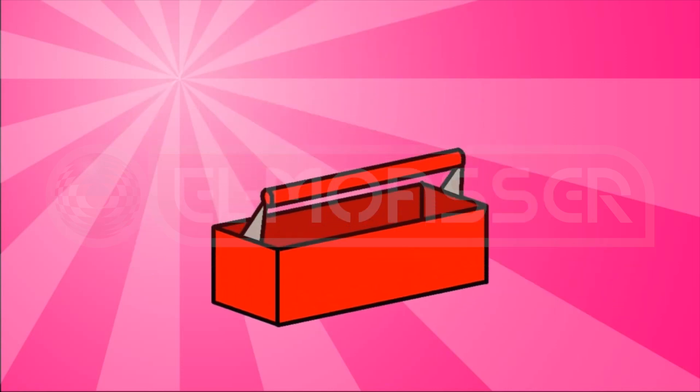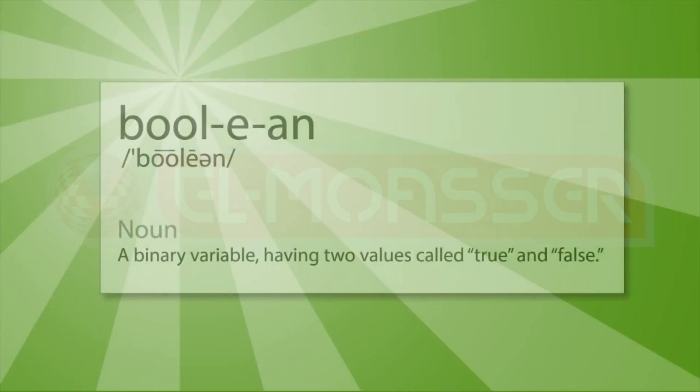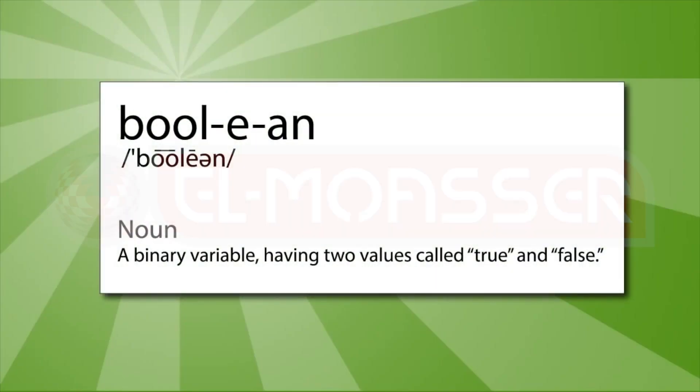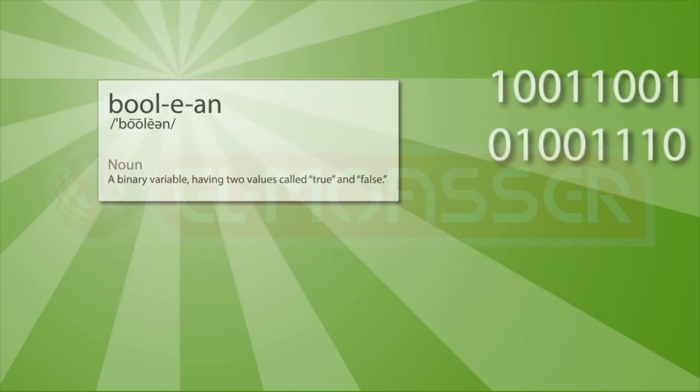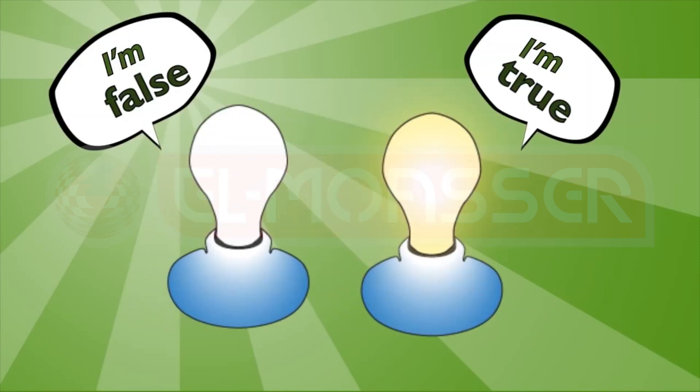Logic gates only work with boolean values. This makes sense when computers work with ones and zeros, or electrical current or no electrical current, or on and off, which is like true and false.